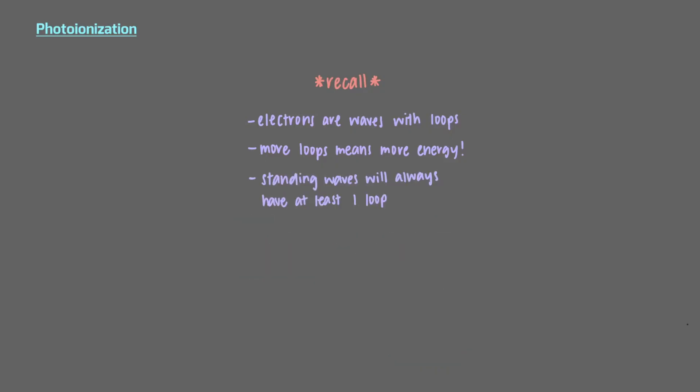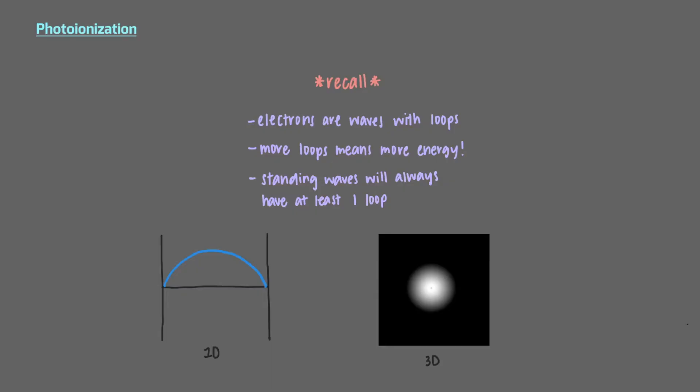In 1D, a one-loop wave looks like this. In 3D, we saw that single-loop electrons are called 1s and look like spheres.